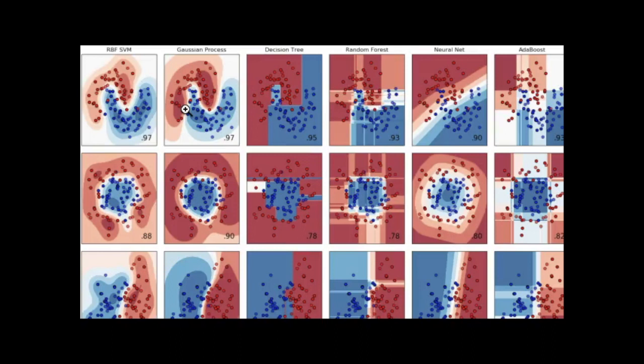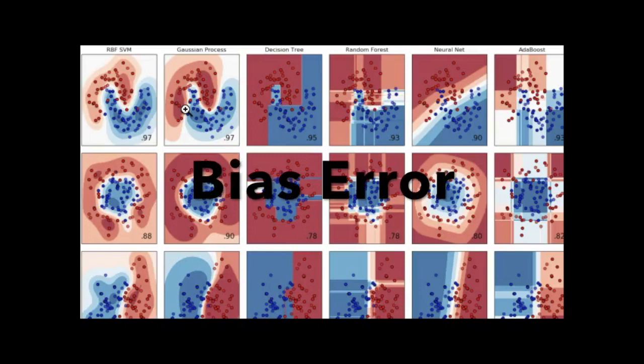The rows are types of data. You can see that the models themselves — the curved regions of those colors — don't always fit the data just perfectly. That is called bias error: your model simply cannot fit to the type of data that you have.